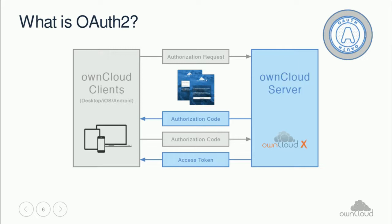This schema provides details on the authorization flow using the example of OnCloud. Clients on the left and server on the right may also be exchanged with other applications, as the flow is identical. All in all, a client issues an authorization request. The user logs in, and after exchanging authorization codes, the client receives a unique access token. This simplifying can also be seen as a separate password explicitly for this client.